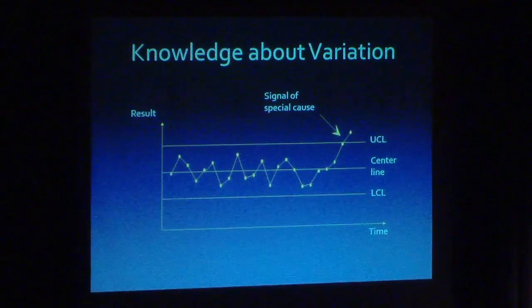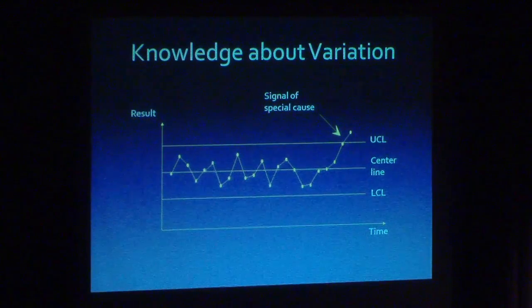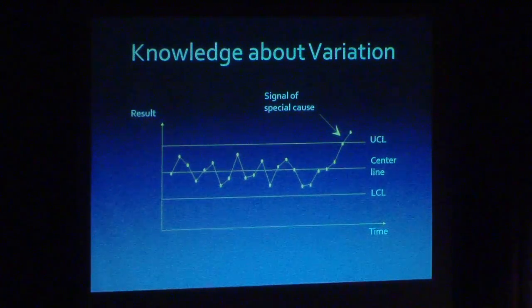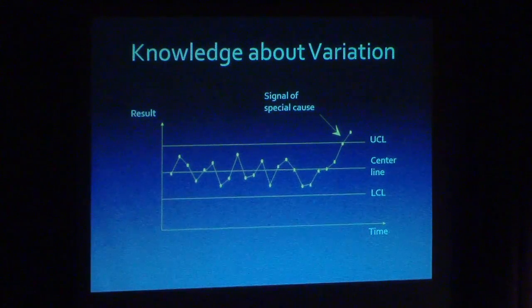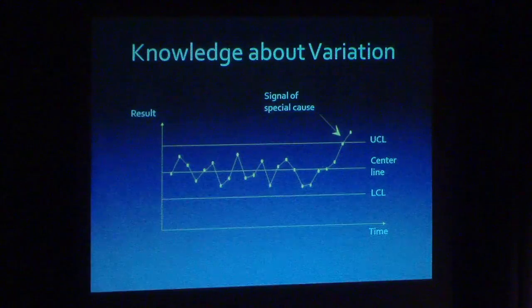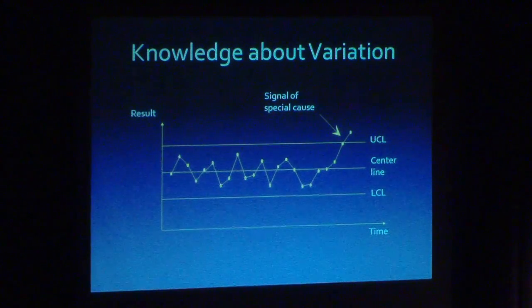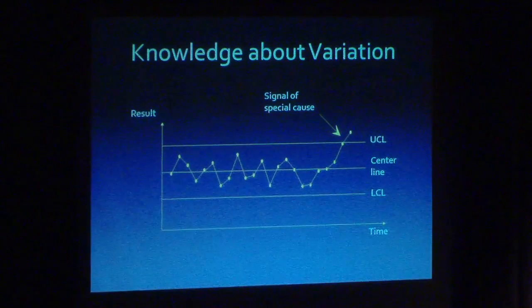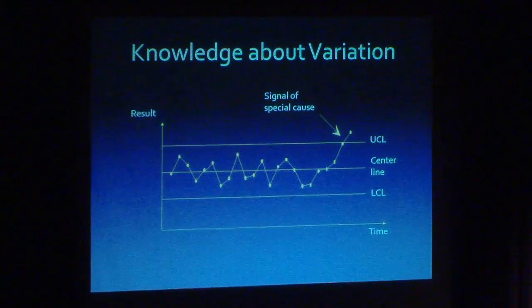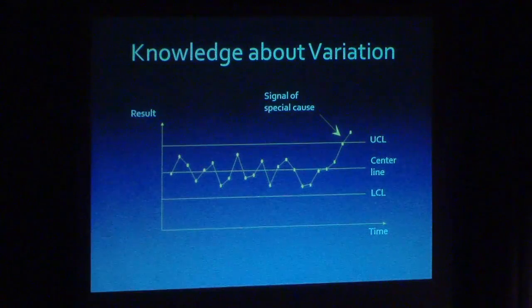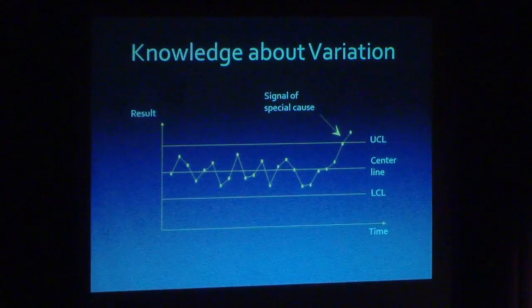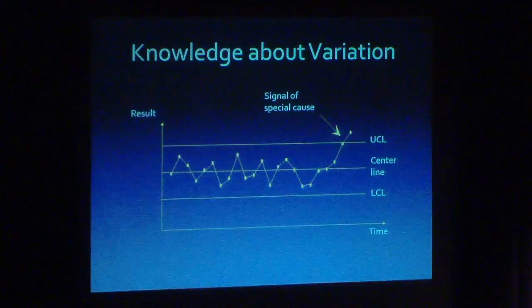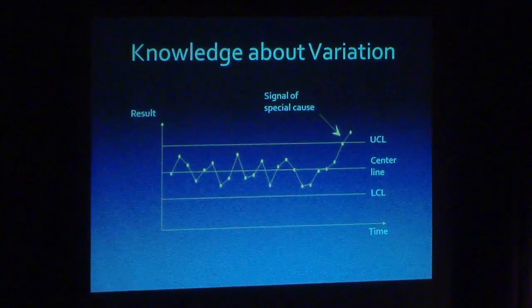For that reason, some people have said that they would rather call a control chart a learning chart. In this particular chart here, we see a series of results plotted, and there is an upper control limit and a lower control limit. Those limits are calculated from the data - these aren't limits that come separately from what we would like to see.